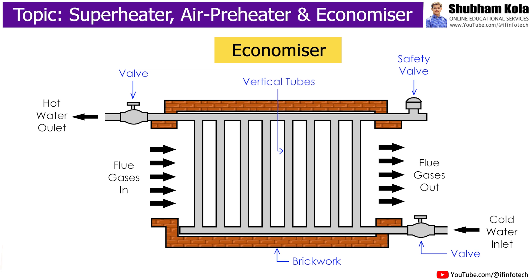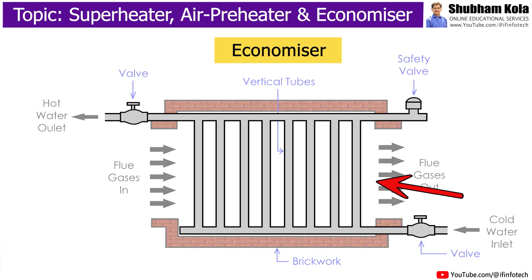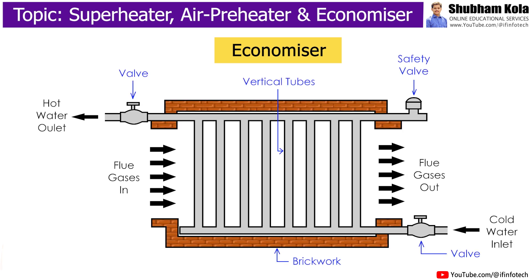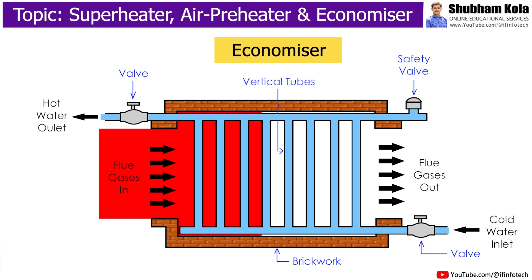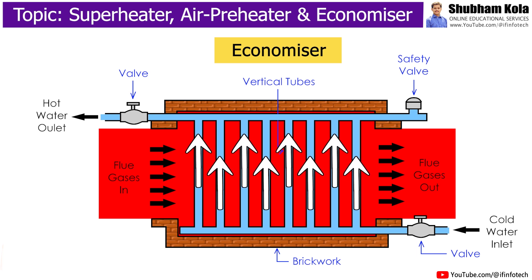The economizer is placed before the air preheater. It consists of a series of vertical tubes provided with a safety valve. The feed water is pumped to the bottom header and is carried up to the top header through a number of vertical tubes. The hot flue gases are allowed to pass over the external surface of the tubes, heating the feed water which flows upward. This heated water is then supplied to the boiler.